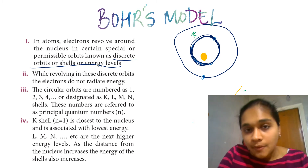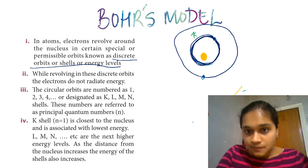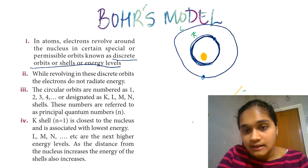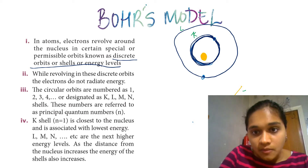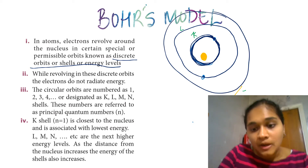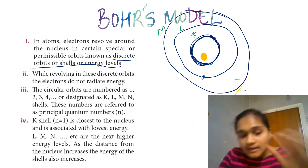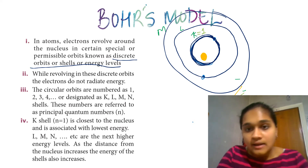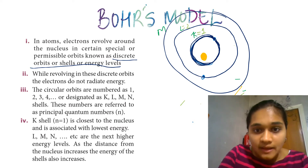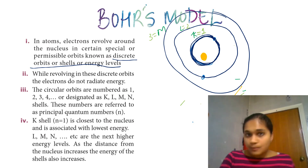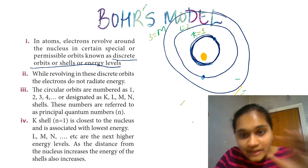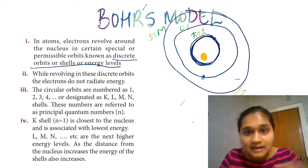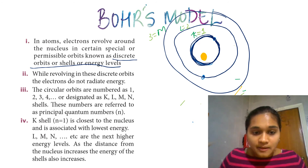Niels Bohr also gave names to the orbits. In the English alphabetical order, the first orbit is called K, the second is L, the third is M, then N, O, P. The K shell is number 1, L is number 2, and M is number 3. The K shell has less energy than the outer shells.